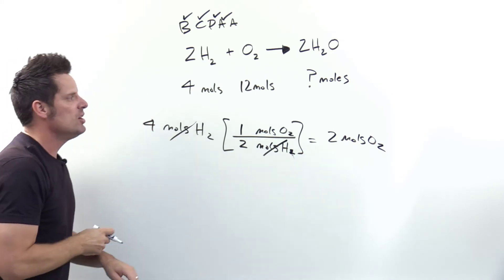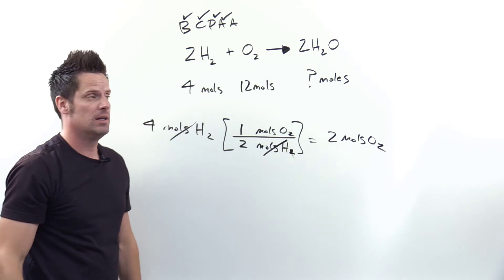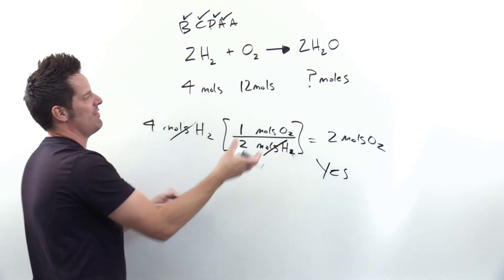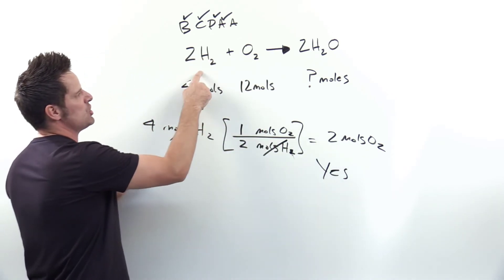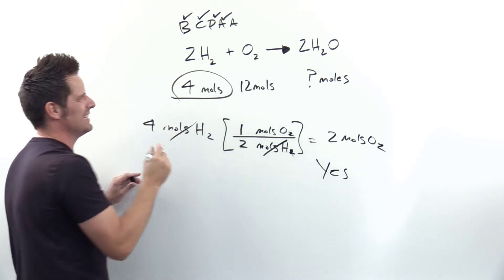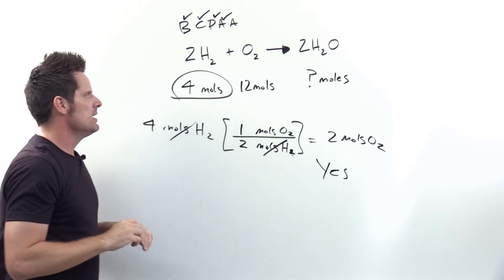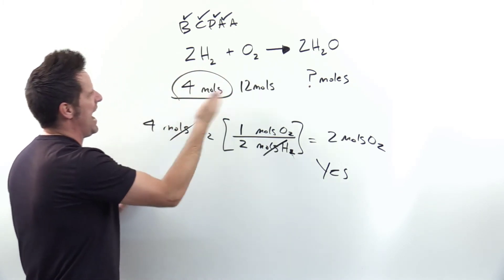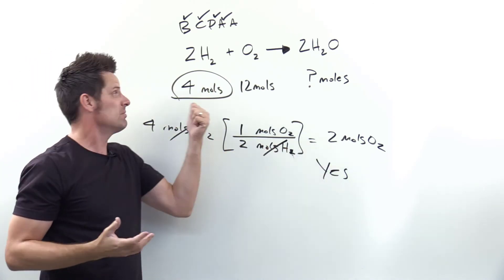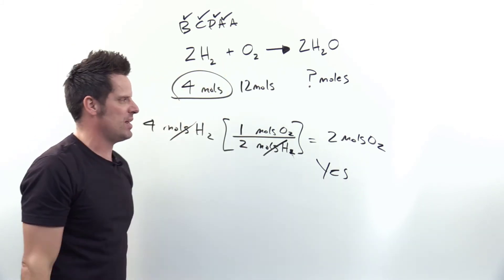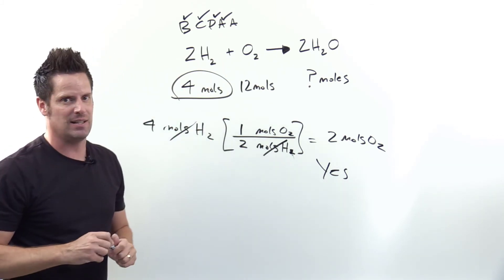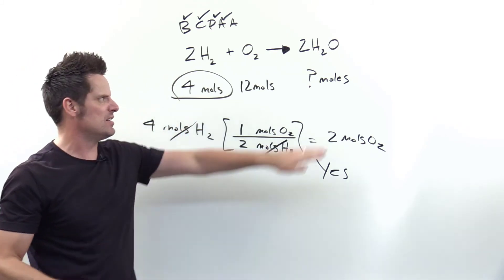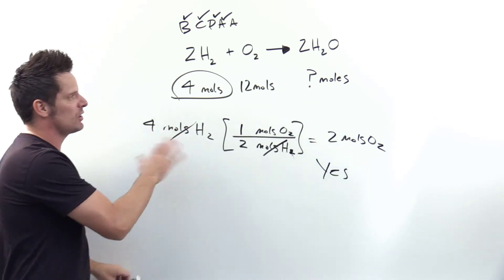Now the second A is: do I have at least two moles of O2 in this scenario? How many moles did the problem give me? I've got 12. The answer is yes — I have more than two moles, which means that the H2 runs out first. H2 is the limiting reactant. With a two-to-one ratio, I would only need two moles of O2 to react with four moles of H2, but I've got way more O2 than I need. So H2 runs out first — it's the limiting reactant, and that answers the first half of the question.